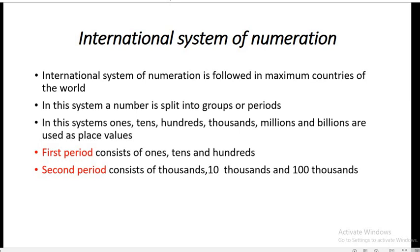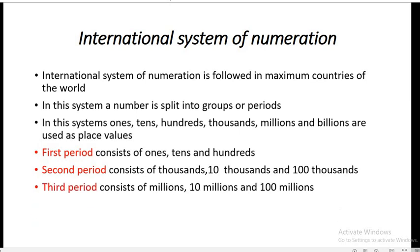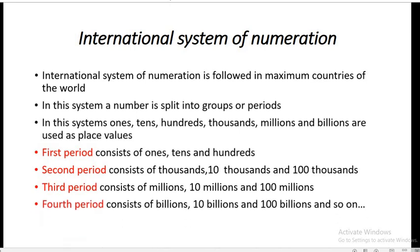The first period consists of ones, tens, and hundreds. The second period consists of thousands, ten thousands, and hundred thousands. The third period consists of millions, ten millions, and hundred millions. Groups are basically hundreds, thousands, millions, billions, and so on.